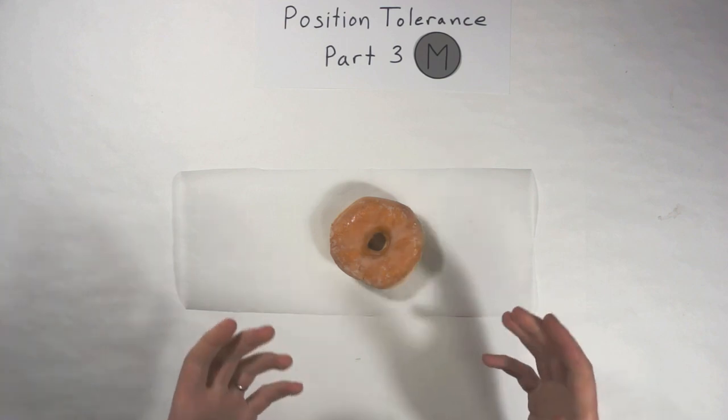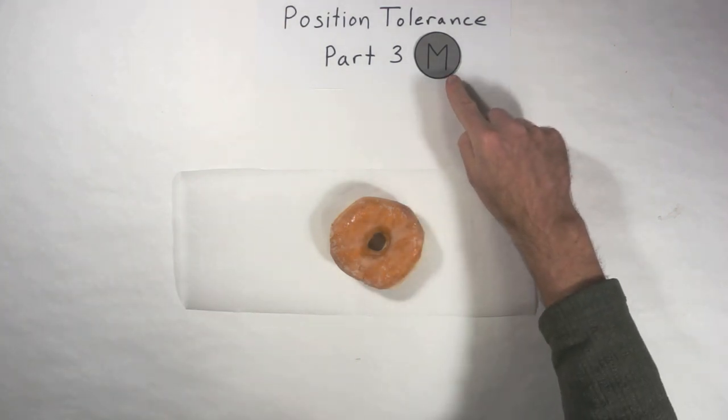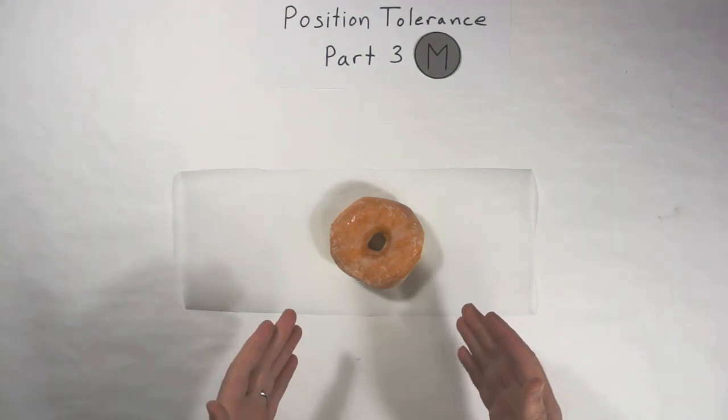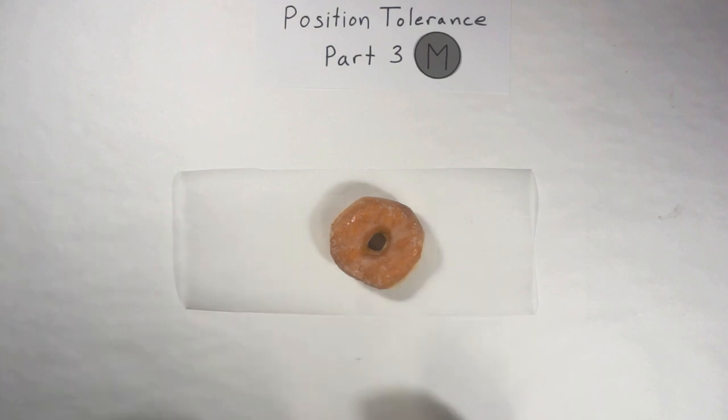Because the concept of maximum material condition, when people see this circle M, it's not that bad, but it's kind of confusing. So, let's talk about doughnuts for a second.